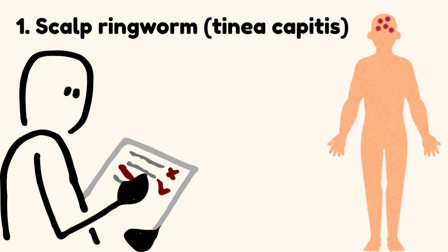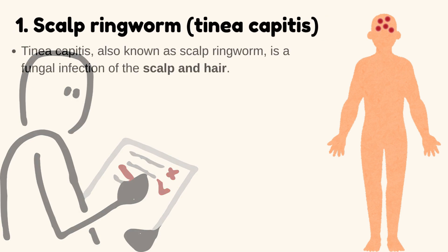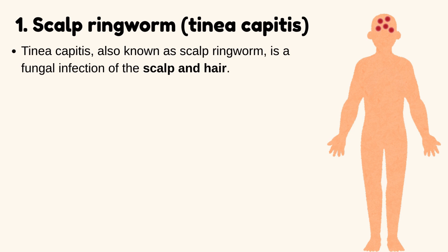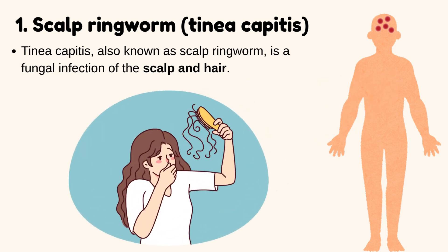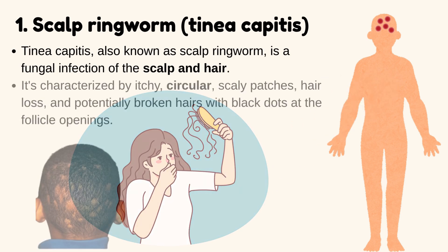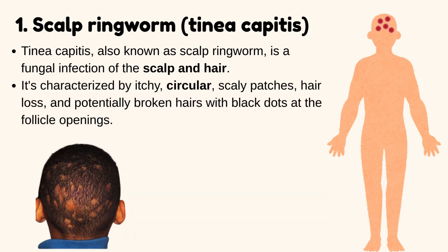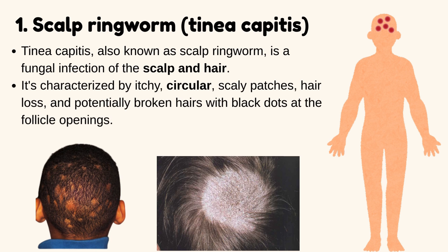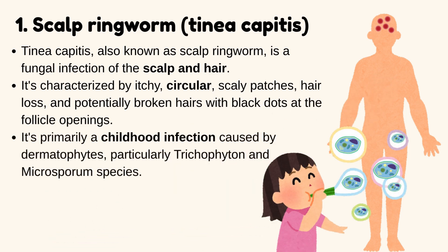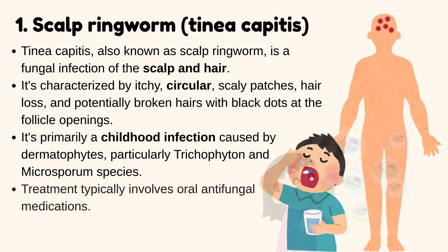Scalp ringworm — Tinea capitis. Tinea capitis, also known as scalp ringworm, is a fungal infection of the scalp and hair. It is characterized by itchy, circular, scaly patches, hair loss, and potentially broken hairs with black dots at the follicle openings. It is primarily a childhood infection caused by dermatophytes, particularly Trichophyton and Microsporum species. Treatment typically involves oral antifungal medications.